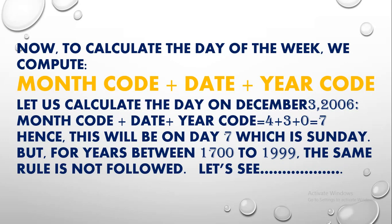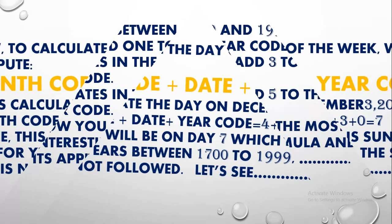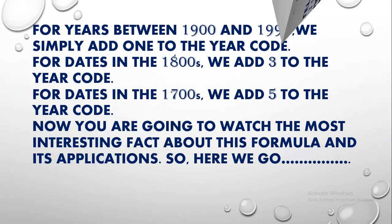Now let us calculate the day on December 3, 2006. We compute: month code plus date plus year code equals 4 plus 3 plus 0, which equals 7. Hence the day is Sunday. For dates in the 1900s, 1800s, and 1700s, we add 1, 3, and 5 to the year code respectively.